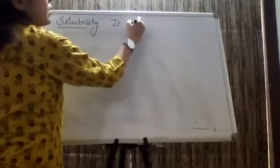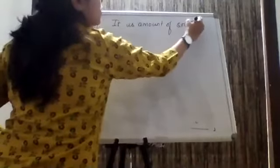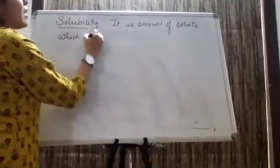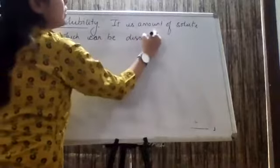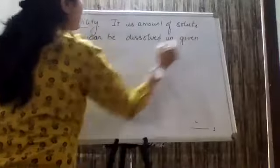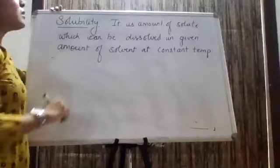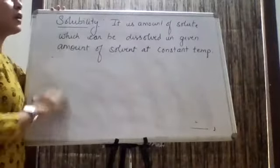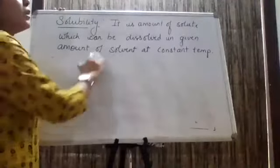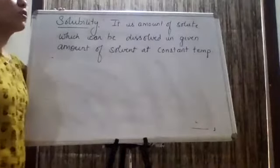The first thing which comes when I am talking about solubility — what is solubility? It is the amount of solute which can be dissolved in the given amount of solvent at constant temperature. We have discussed this in ionic equilibrium last year.